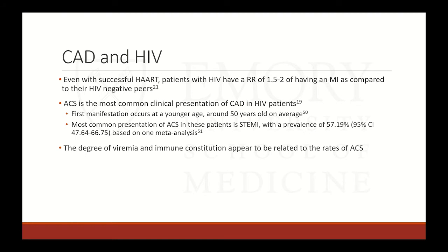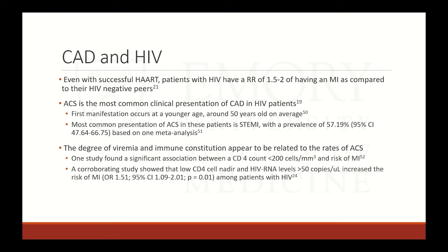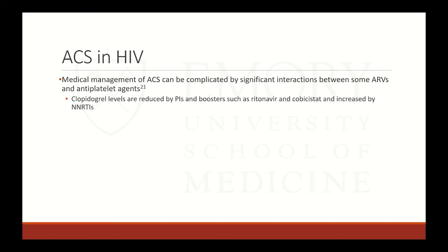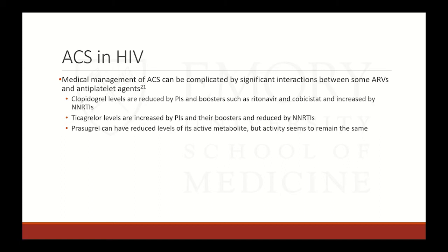The degree of viremia and immune reconstitution appear related to ACS rates. One study showed an association between CD4 count less than 200 and MI. Medical management of ACS in HIV patients is complicated by significant interactions between antiretrovirals and antiplatelet agents. Clopidogrel levels are reduced by protease inhibitors and boosters such as ritonavir and cobicistat, and increased by some NNRTIs. Ticagrelor levels are increased by PIs and dangerously reduced by certain NNRTIs. Because of this, prasugrel — which has reduced active metabolite levels but similar activity at baseline — is the recommended antiplatelet agent of choice in HIV patients with ACS.